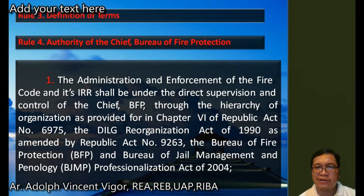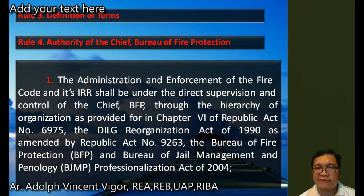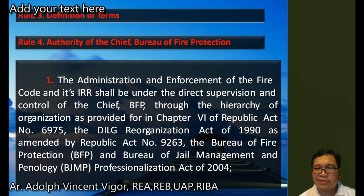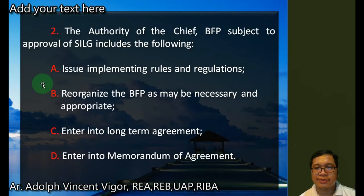Under Rule 4, the authority of the Bureau of Fire Protection: the administration and enforcement of the fire code and its IRR should be under the direct supervision and control of the Chief of the BFP, through the hierarchy of organization as provided in Chapter 6 of Republic Act 6975, the PNP Reorganization Act of 1990, as amended by RA 9263, and the Bureau of Fire Protection and Bureau of Jail Management and Penology Professional Aging Act of 2019. The authority of the Chief of the BFP, subject to approval of the DILG, includes implementing rules and regulations and reorganizing the BFP as necessary.